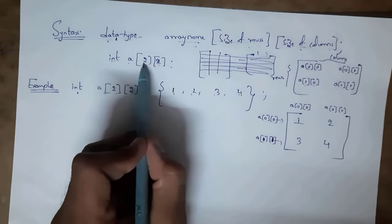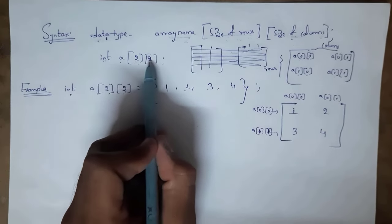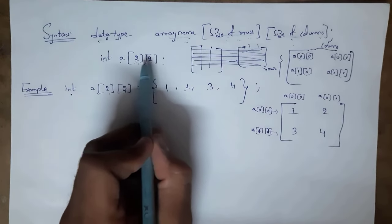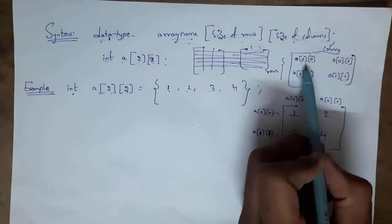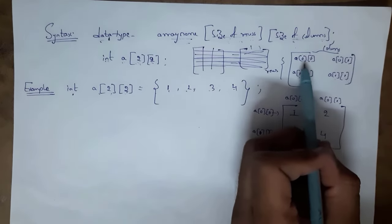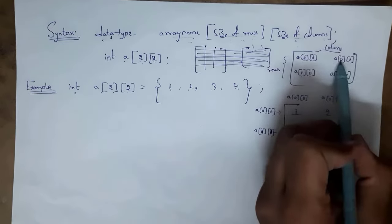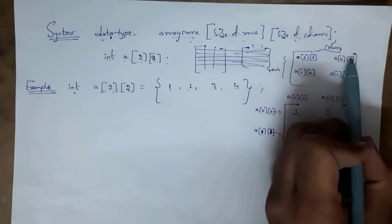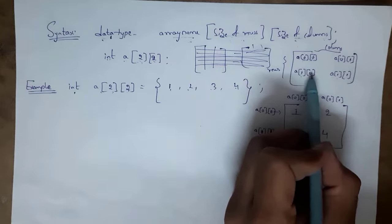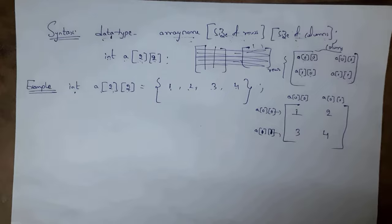In a 2D array, index numbers start with 0. a[0][0] represents first row, first column. a[0][1] represents first row, second column. a[1][0] represents second row, first column. a[1][1] represents second row, second column.